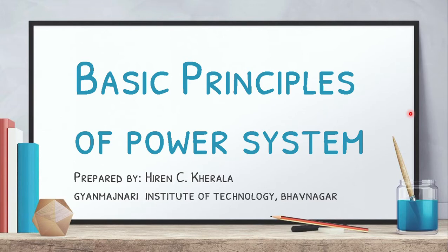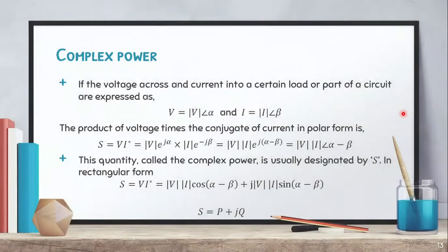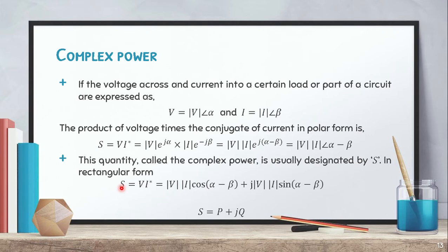Let me remind you about complex power. Complex power S is nothing but voltage multiplied by I conjugate. Voltage is given by V, the RMS value with phase angle alpha, represented in exponential form as E raised to J alpha. Similarly, current I conjugate is I raised to minus J beta. After that, complex power in rectangular form is represented as VI cos(alpha minus beta) plus J VI sin(alpha minus beta).